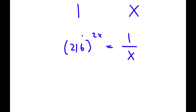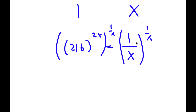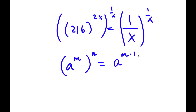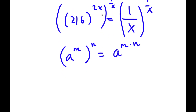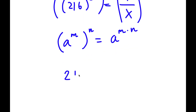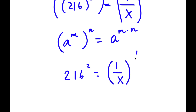Now I'm going to take the power of 1 over x on both sides. If I have something with the form a to the power of m to the power of n, this is equal to a to the power of m times n. So 216 to the power of 2x to the power of 1 over x — 2x times 1 over x, the x cancels out, leaving 2 times 1 which is 2. So now I have 216 to the power of 2 is equal to 1 over x to the power of 1 over x.